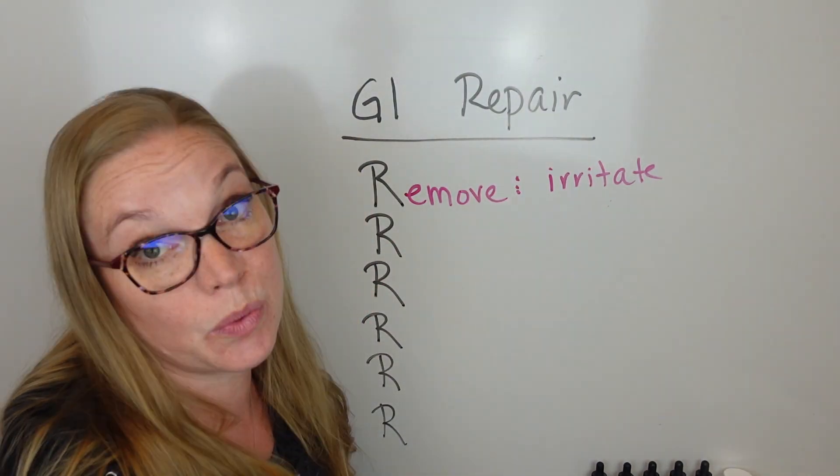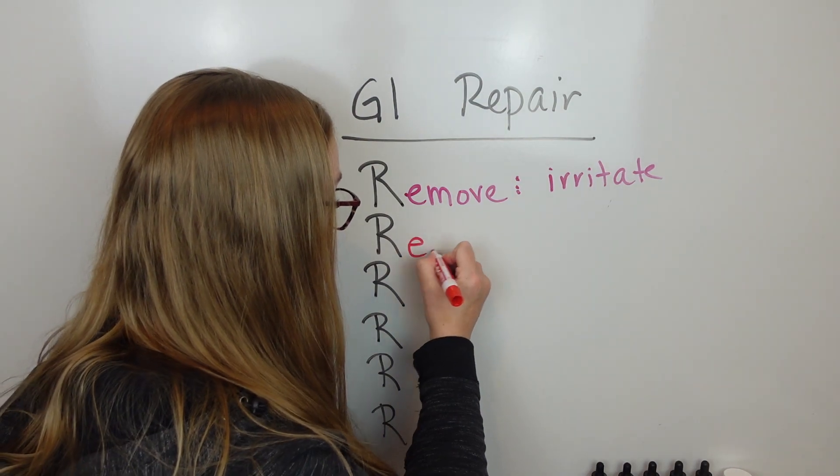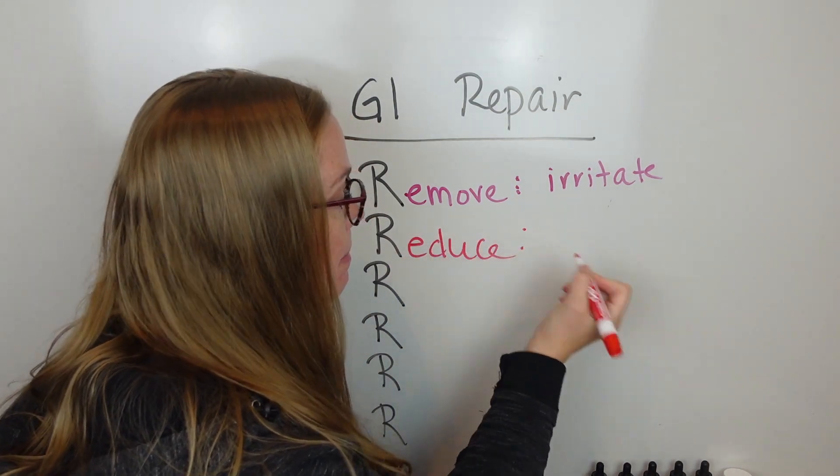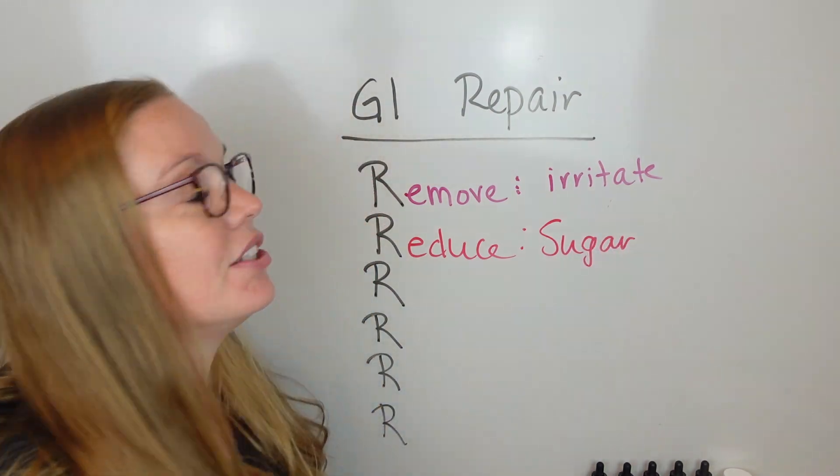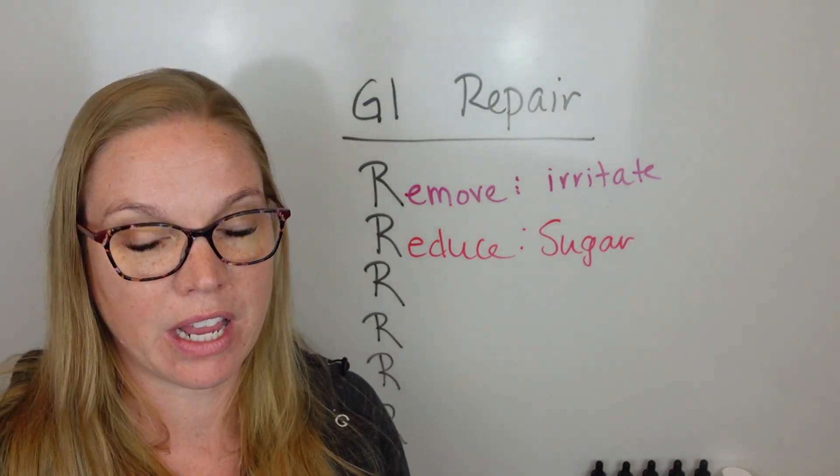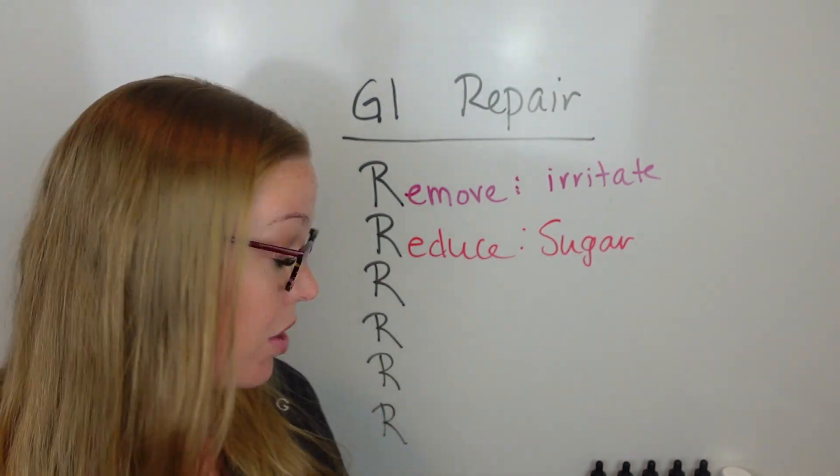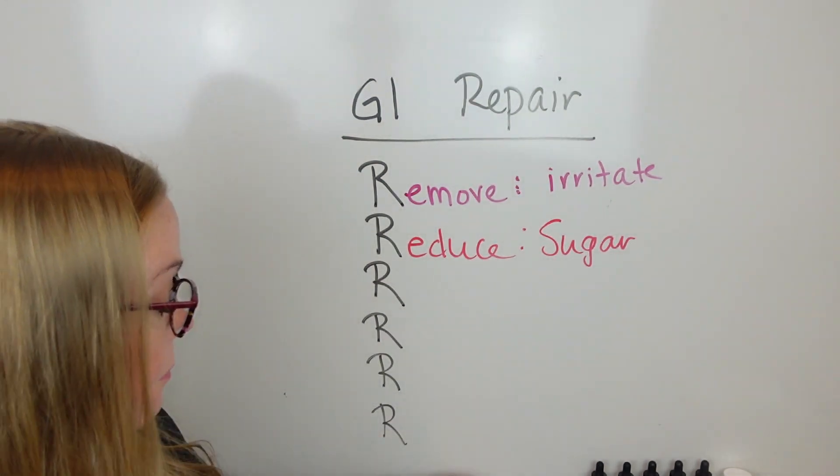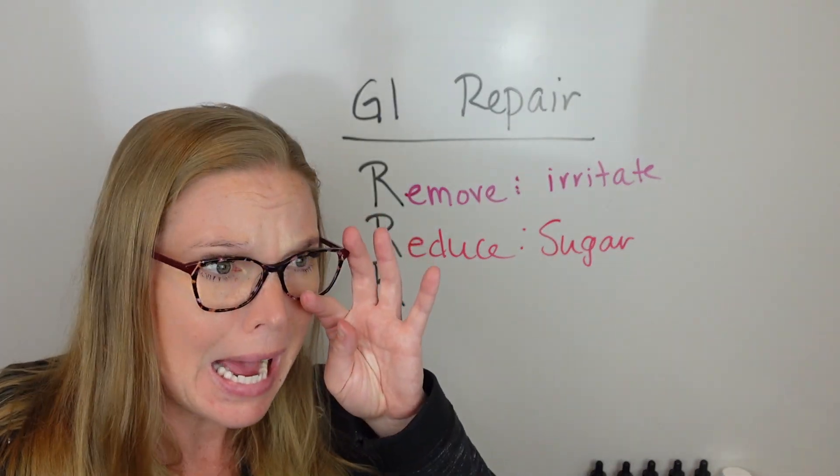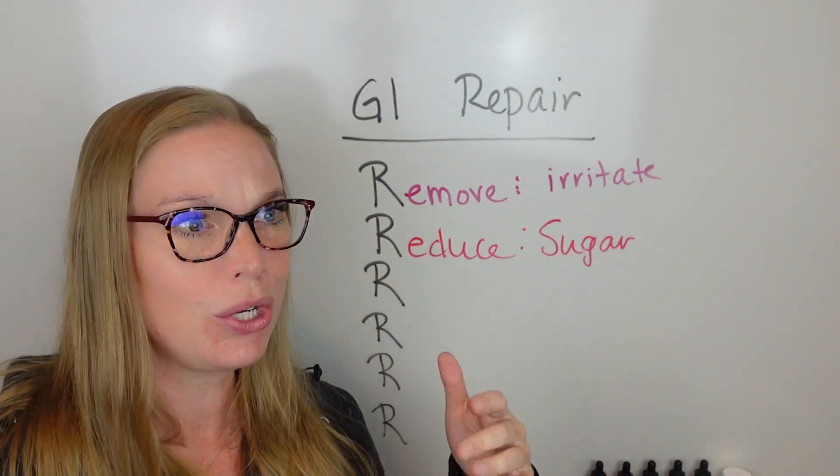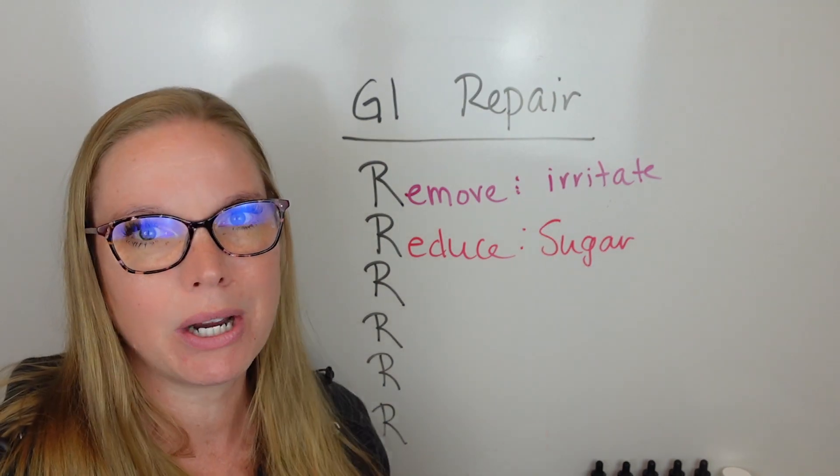The next one is reduce. And the main thing to reduce here is sugars. I just saw something recently that they were talking about the amount of sugar that is in the American diet now. Everything in foods now. Foods compared to even 30 years ago. They add so much more sugar to everything. Sauces, marinades, dressing.